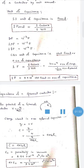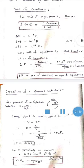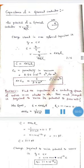The capacitance of a spherical conductor of radius r is C = 4πε₀r. Here ε₀ is the permittivity in vacuum, with value 8.85×10⁻¹² C²/(N·m²). The value of 4πε₀ is 1/(9×10⁹), and correspondingly 1/(4πε₀) = 9×10⁹ N·m²/C².